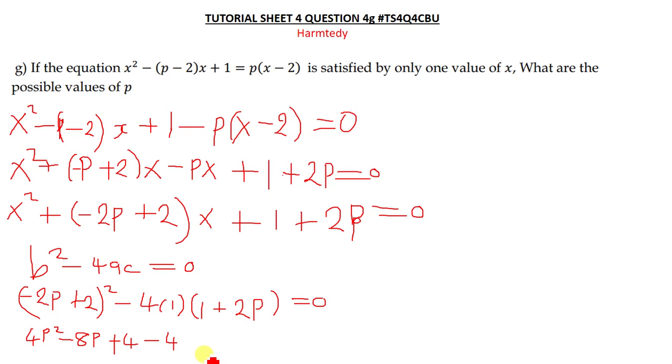Then this will just give us negative 4, then negative 8p. Negative 8p is equal to 0. So we can see that this and that goes, so this will give us negative 16p.